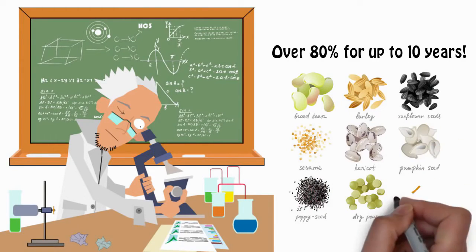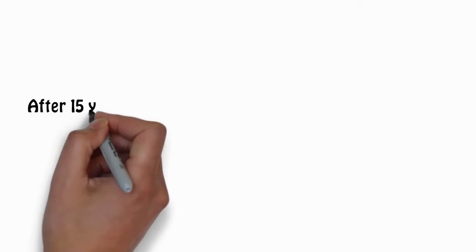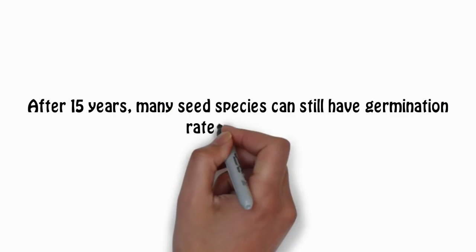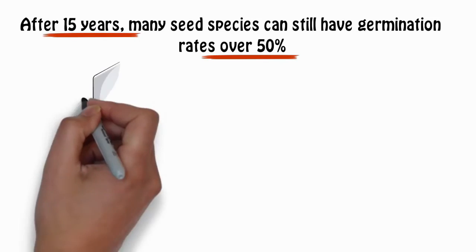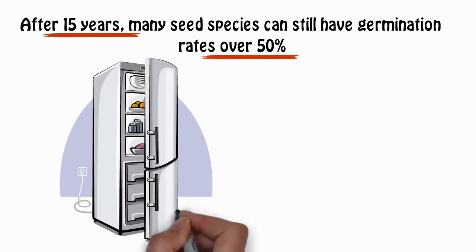The germination rates of properly dried seeds will begin to decline like all seeds, but they decline much more slowly than regular crop year seeds. After 15 years, many seed species can still have germination rates over 50%. If you store your properly dried seeds in the freezer, you can lengthen their germinating lifespan even more.